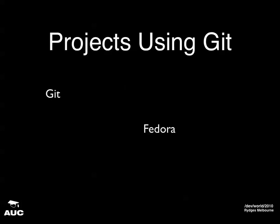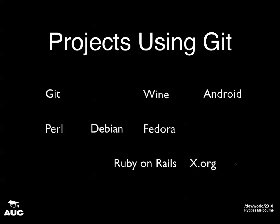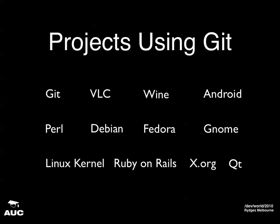Lots of projects are using Git. Android — that should be a popular one here at a Mac developer conference, especially for iOS developers. The Linux kernel: as of August this year, the Linux kernel was 13 and a half million lines of code. So if Git can handle managing that, I'm pretty sure it can handle managing most of your projects. And of course, Git eats its own dog food — it's also managed under Git.